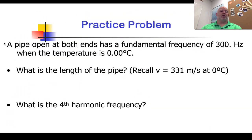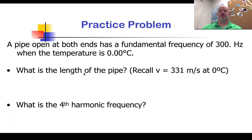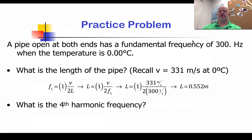Here's a practice problem: a pipe open at both ends has a fundamental frequency of 300 hertz at a temperature of zero degrees Celsius — so the speed of sound is 331 meters per second. What's the length of the pipe? Set up your equation, rearrange it to solve for length, and then solve it. Go ahead and pause the video and work through it, then hit play to go over the answer.